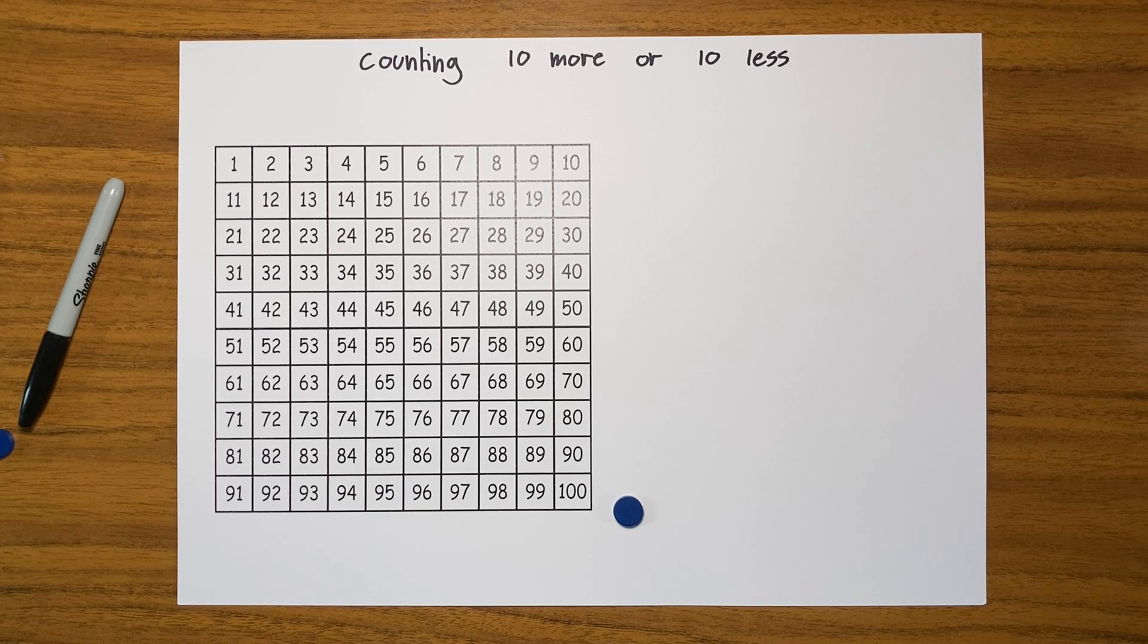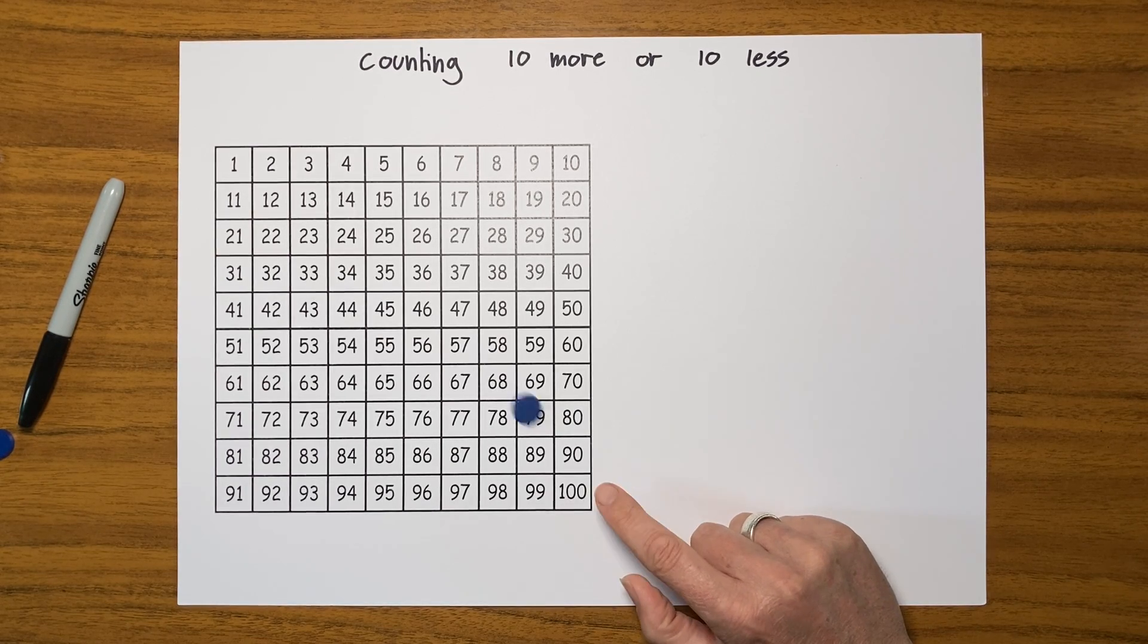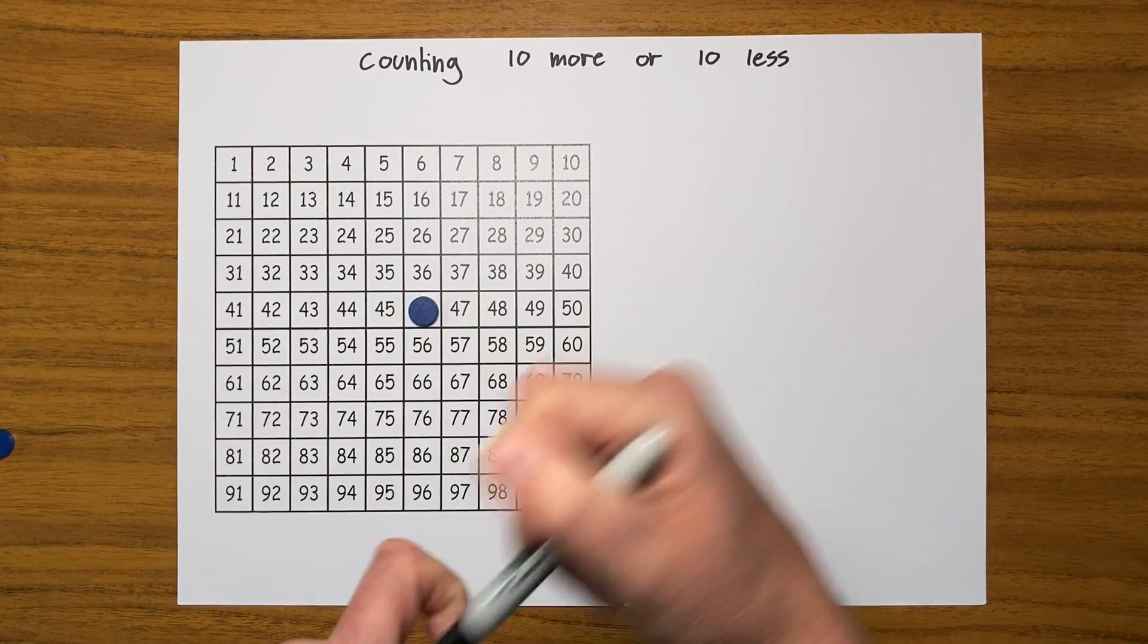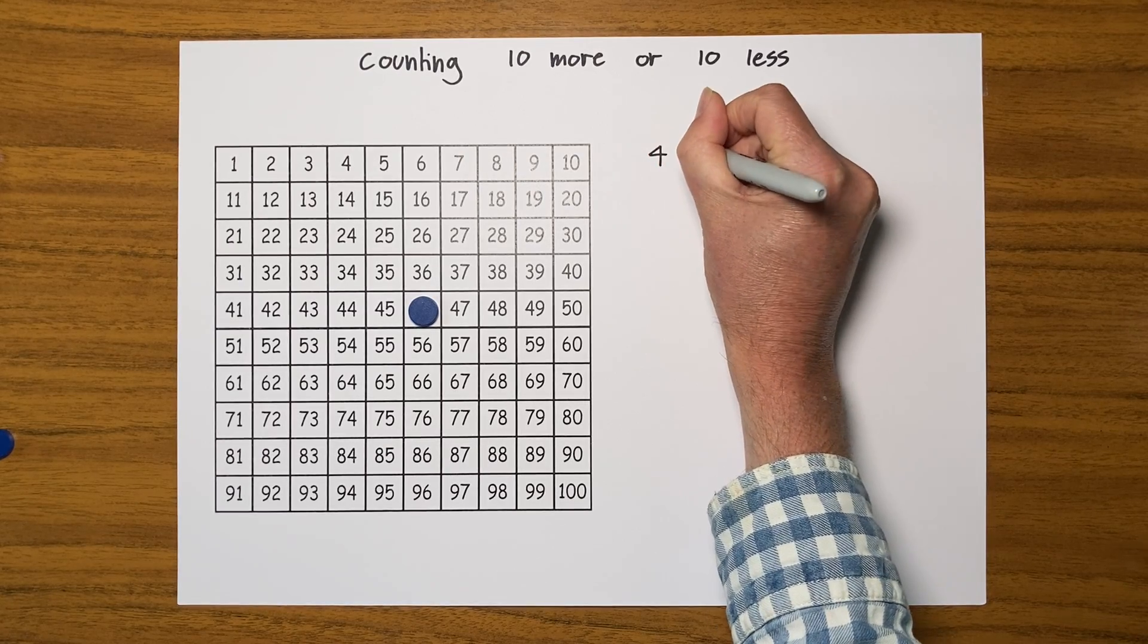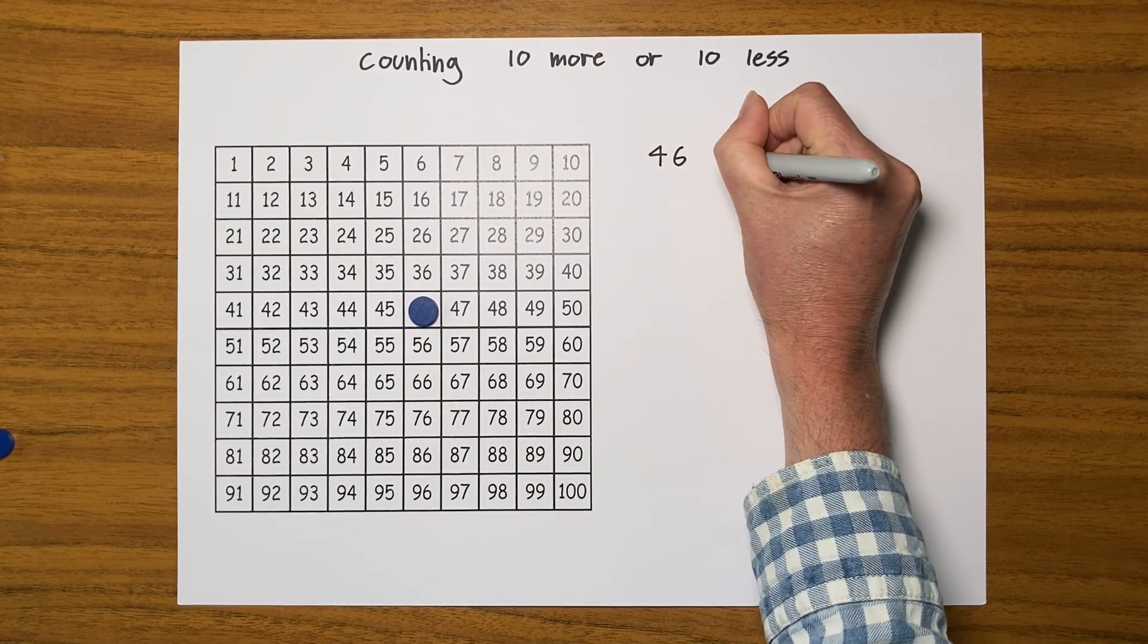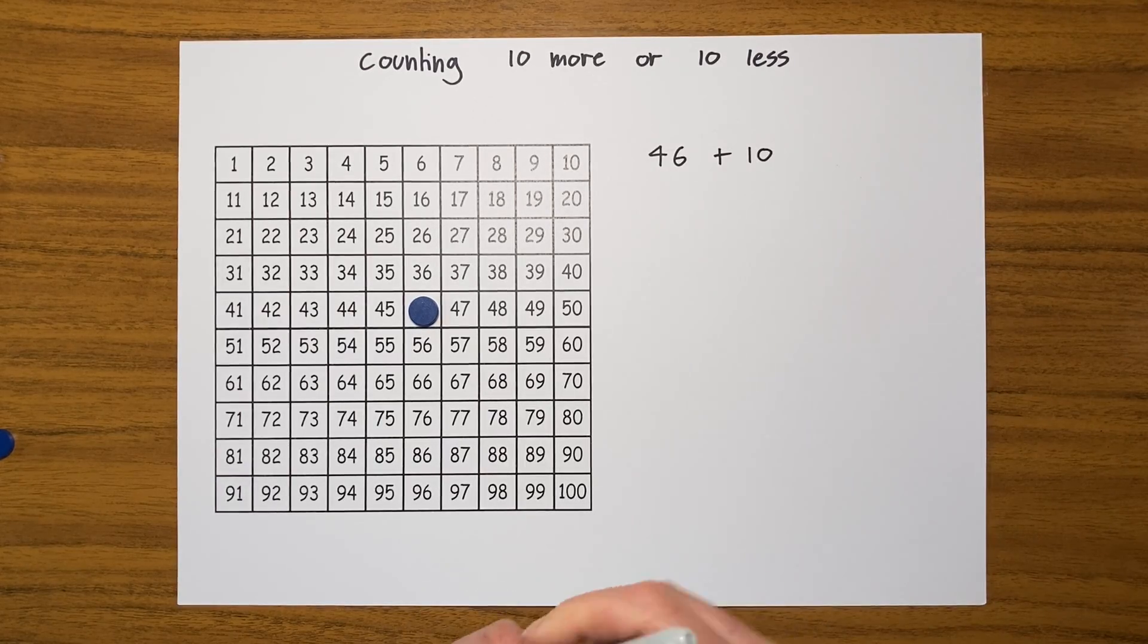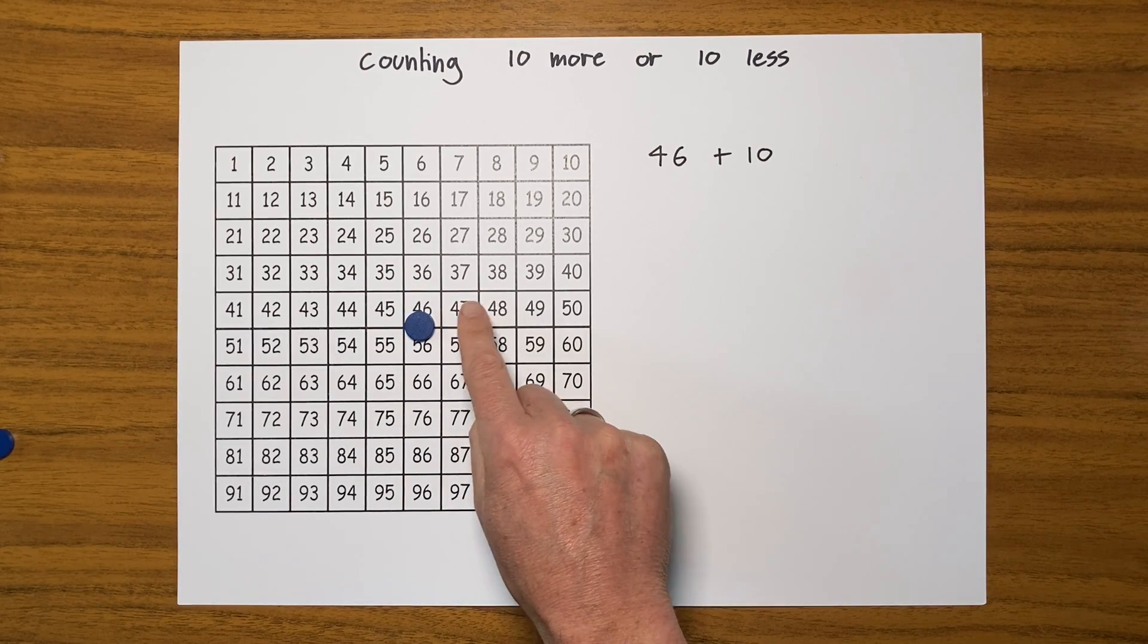So let's just flick my counter, see where it lands. Oh, landed here - 46, and I'm going to write that down: 46. So if I want 46 and I want to add 10, so that's 10 more, obviously I could just count it. I could count 10 on from 46 and go 1, 2, 3, 4, 5, 6, 7, 8, 9, 10.